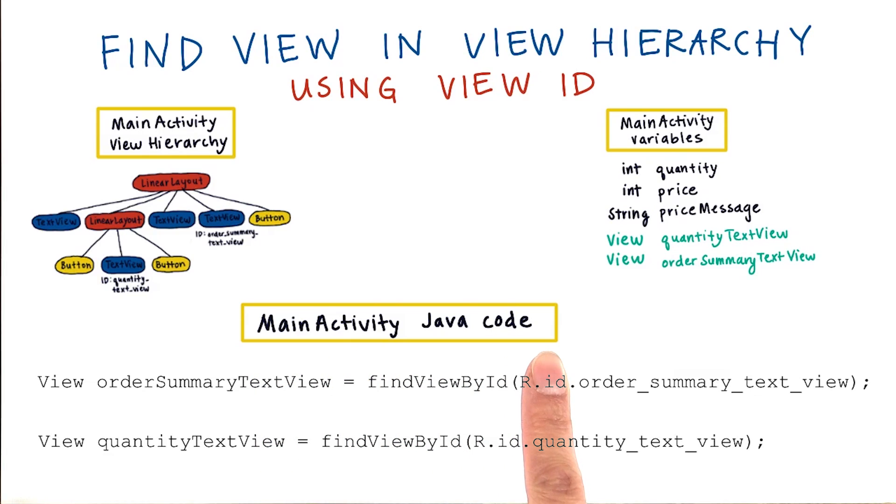The main activity Java code would look like this. We can call FindViewById, and then pass in as an input the resource ID of the view that we want. We gave this text view an ID of orderSummaryTextView, so here we reference it as r.id.orderSummaryTextView. This method will go and traverse the whole view hierarchy and then look for the view with this ID. Then it will return this Java object as the return value of this method. We can store the return value into this variable on the left-hand side called orderSummaryTextView, and this is a variable of type view. So this returns a view, and we store it inside a view variable.